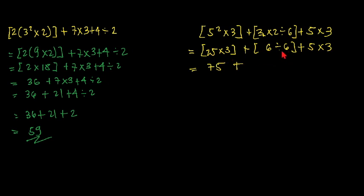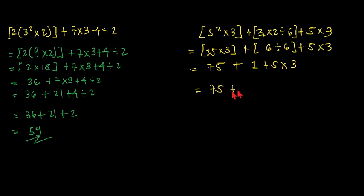Simplifying what is in the bracket: 6 divided by 6 equals 1, plus 5 times 3. Then we do the multiplication because multiplication is higher than addition: 5 times 3 equals 15. So we have 75 plus 1, which is 76, plus 15, that is equal to 91.